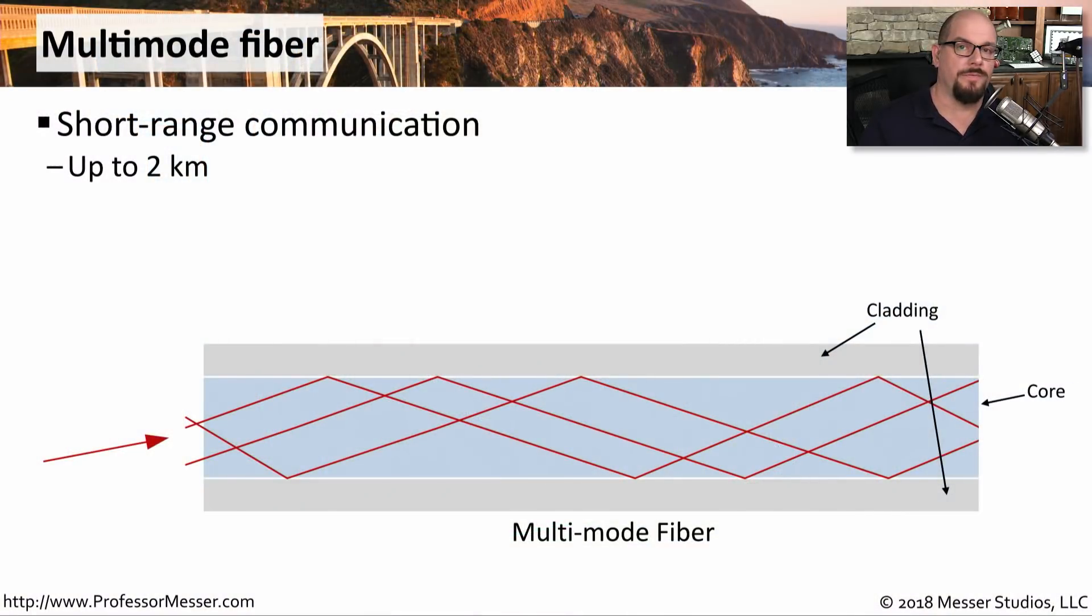When you start working with fiber optics, you'll generally work with multi-mode fiber or single-mode fiber. Multi-mode fiber is commonly used for relatively short range communication in the world of fiber optics. That's usually two kilometers or less in length. The type of light that's being used to send the signal through the fiber is usually something that's also relatively inexpensive, something like an LED.